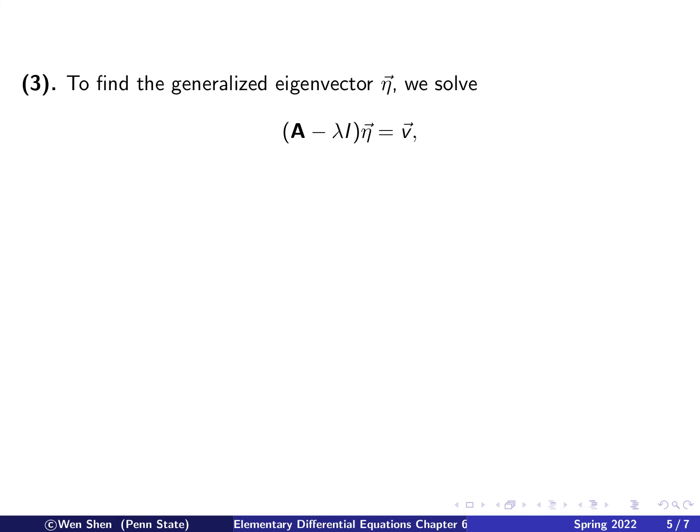And then step 3 is to find the generalized eigenvector, which we call eta. And this is by solving this equation here. So here we already know the lambda, and we also already know the V, and eta is my unknown. Putting in the V here, putting A minus lambda identity, and putting eta1 and eta2, and we see that we have two constraints, which are actually the same, equivalent. So we can just take one, say let's take this one, times that. So we have eta1 plus 2 eta2 equals 2.